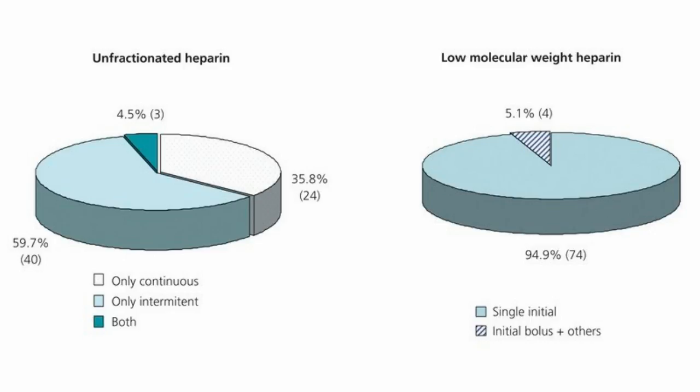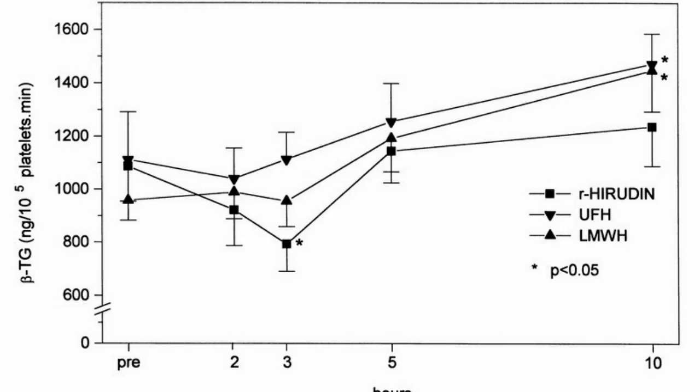This happens when soluble protein fibrinogen is converted to fibrin, a non-soluble form, and it forms clots with platelets. Anticoagulants are used to inhibit this process in high-risk situations like long-time immobilization and surgery.